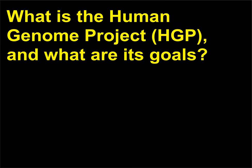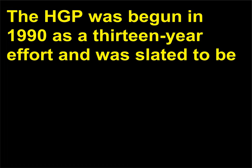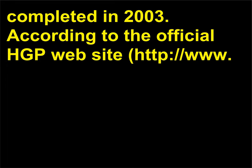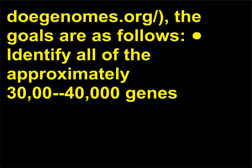What is the Human Genome Project (HGP) and what are its goals? The HGP was begun in 1990 as a 13-year effort and was slated to be completed in 2003. According to the official HGP website, the goals are as follows: